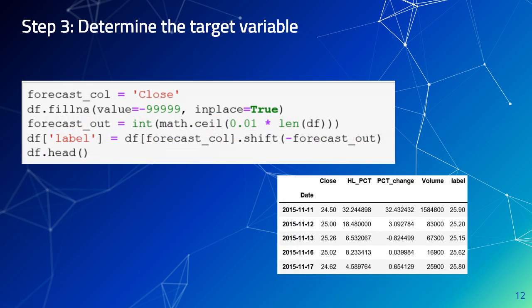In step 3, we determine our target variable. In the first line of the code, we define the close price as our target variable and also define the forecasting column. We fill any null data with a negative value. In our case, we decide the features are the current values and the label shall be the future price, where the forecast length is 1% of the entire length of the data set. We assume all current columns are our features and add a new label column using a simple Pandas operation, as shown in the graph below.